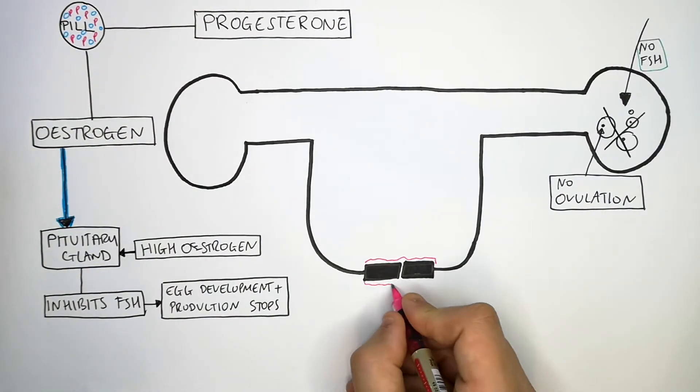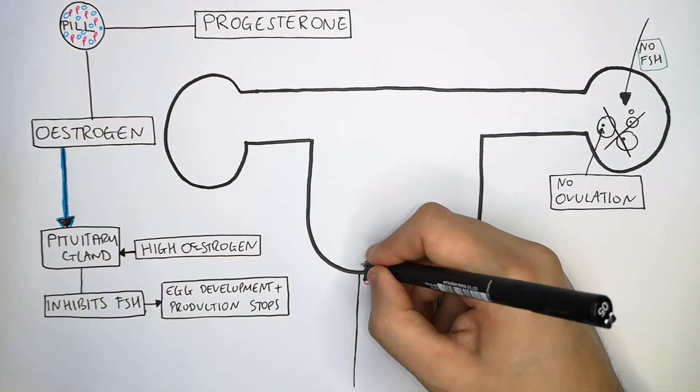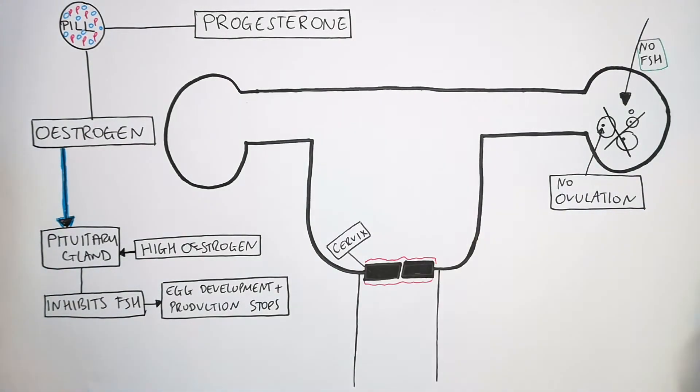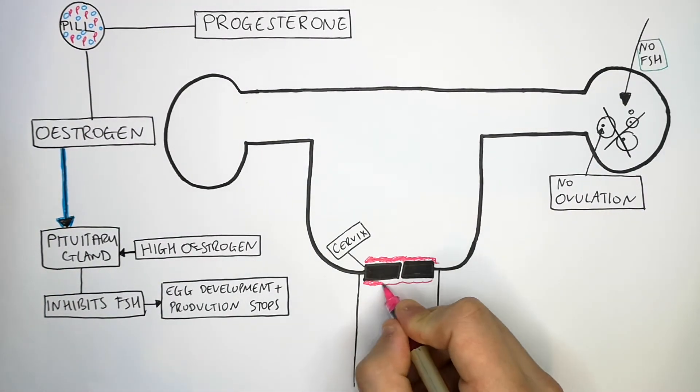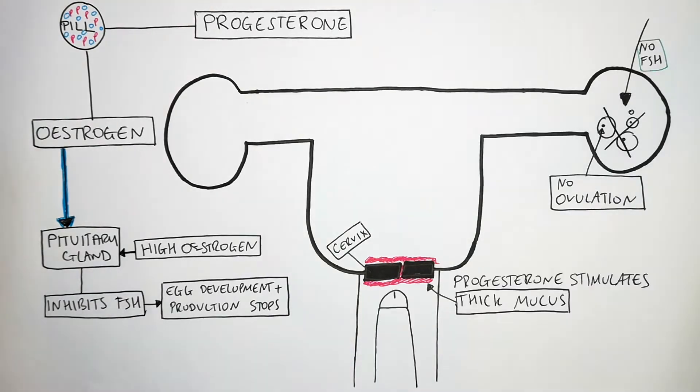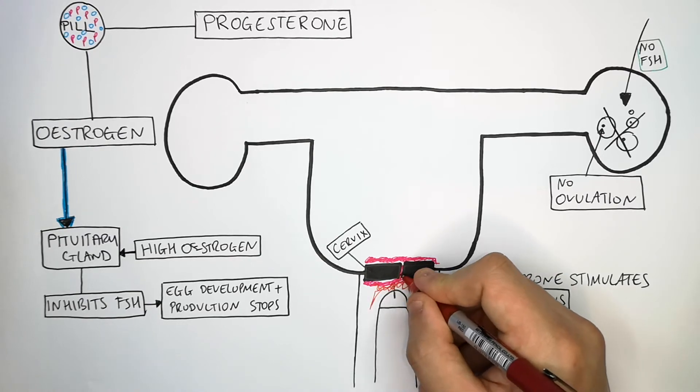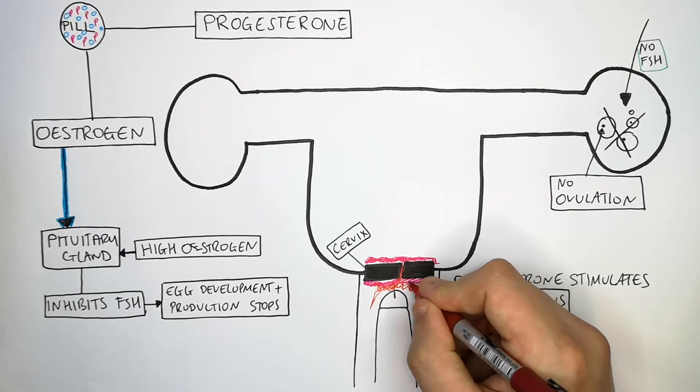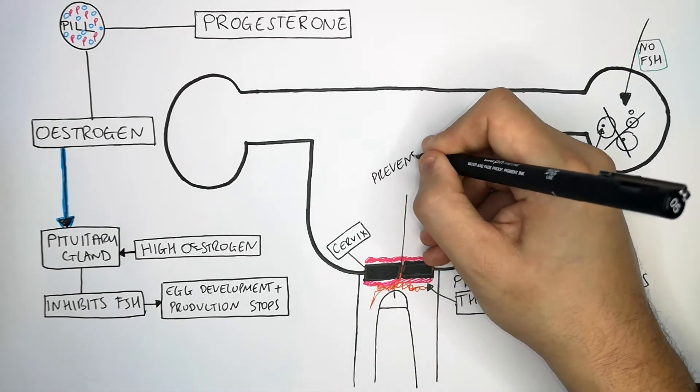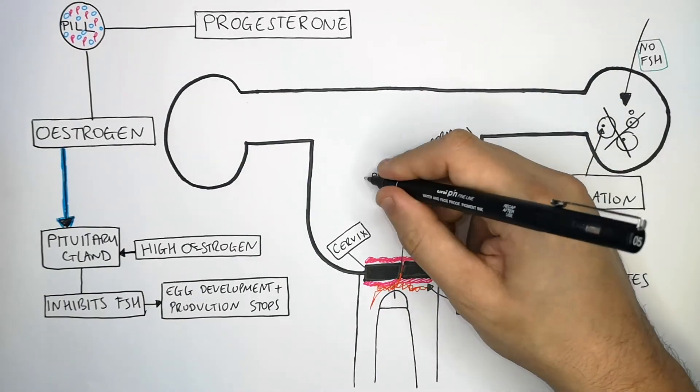The progesterone works differently to the oestrogen. The progesterone causes a thick mucus to line the cervix. When a man ejaculates into the vagina, the sperm will find it very difficult to enter the uterus from the vagina. This prevents the sperm from fertilizing the egg.